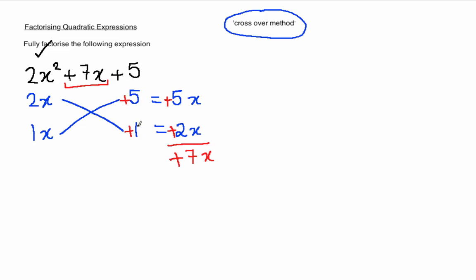Plus 5 and plus 1 multiplied together to give you plus 5. Plus 5x added to plus 2x does give you plus 7. So all three things work.